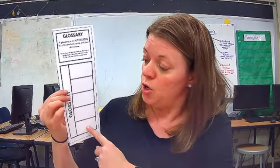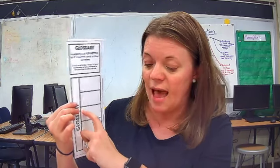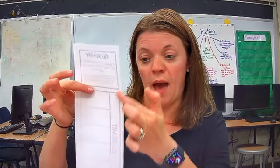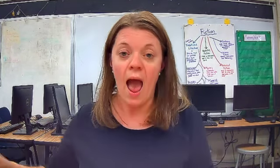After you've written the words in alphabetical order, you're going to cut this out and then cut on the dotted lines to make slats. You'll put glue on the back where it says glossary and glue it into your foldable like so.